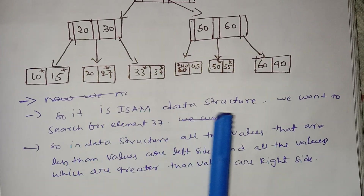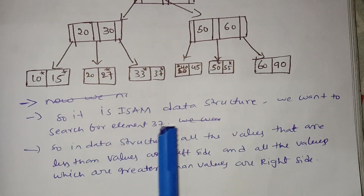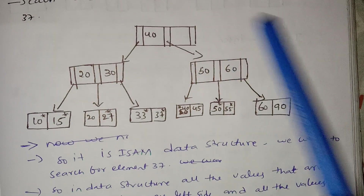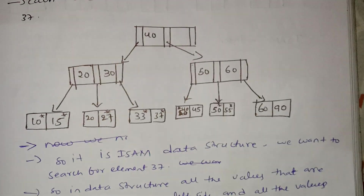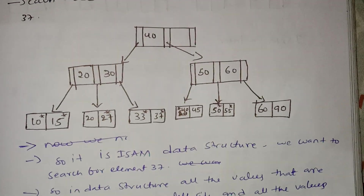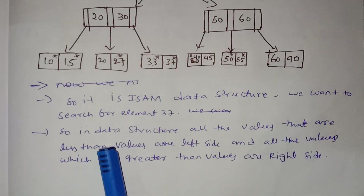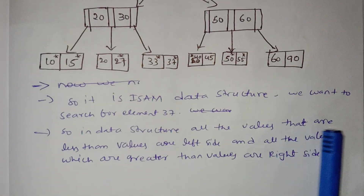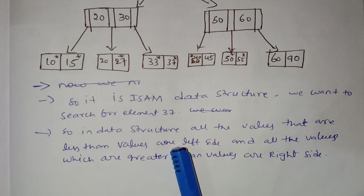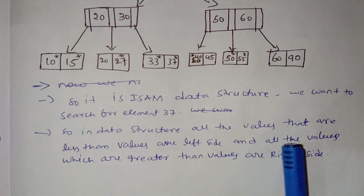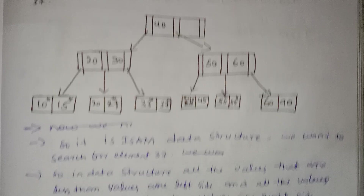This is the ISAM data structure and we want to search for 37. In this data structure, all values less than a given value are on the left side, and all values greater are on the right side.